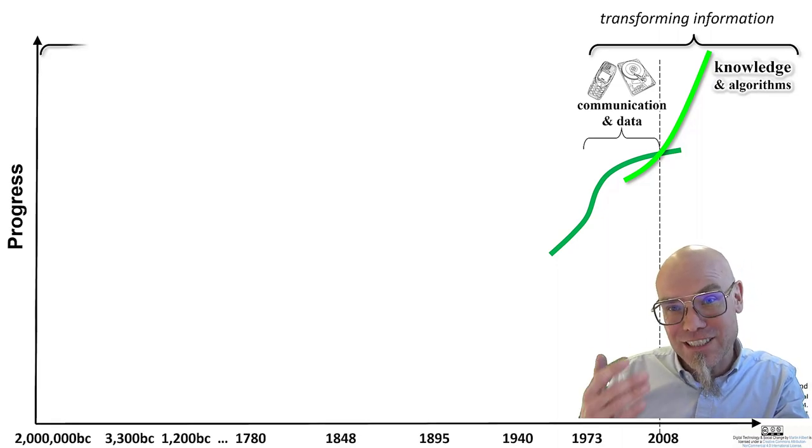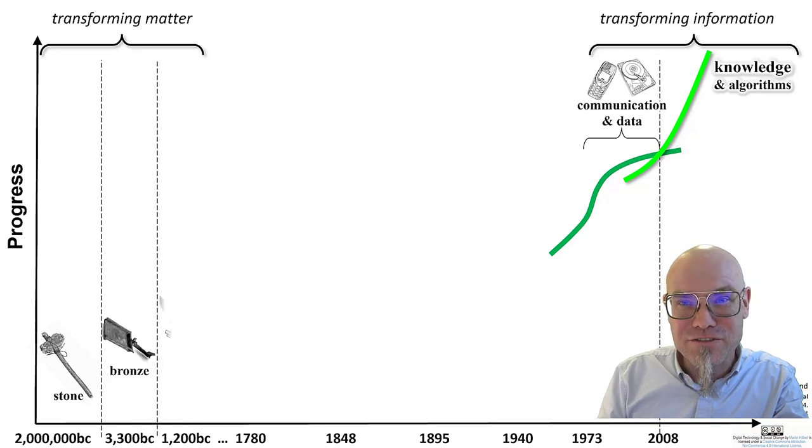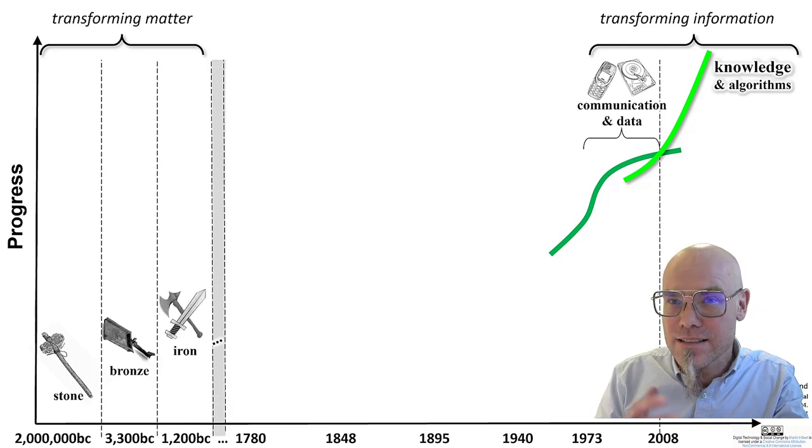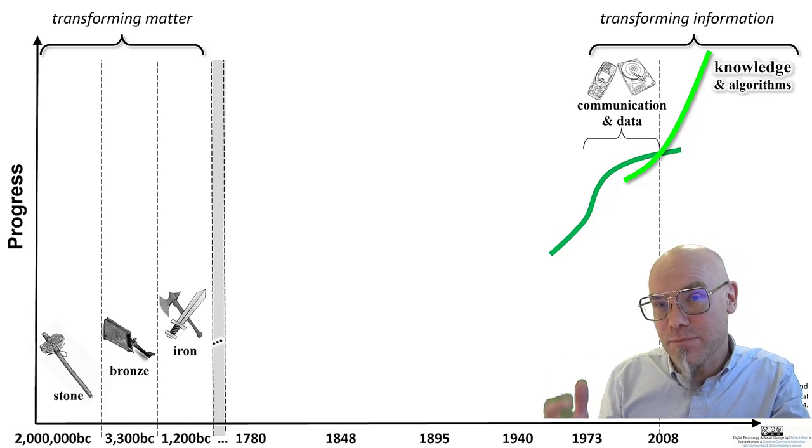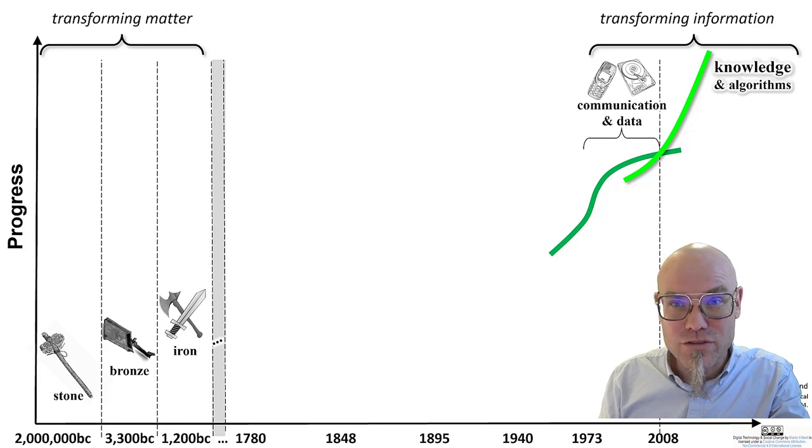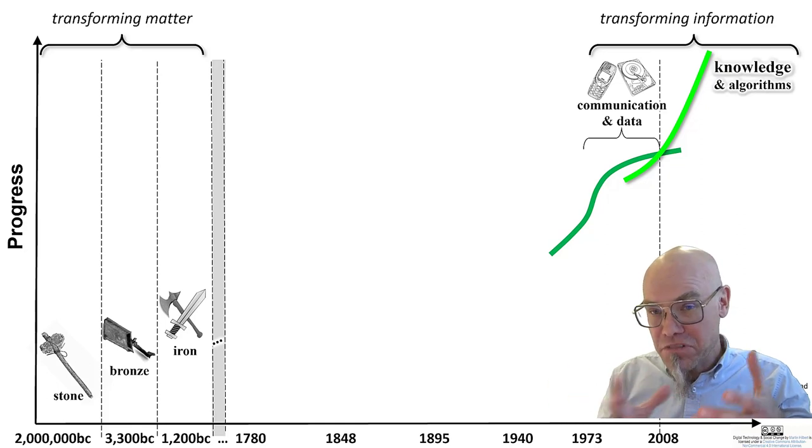And if we go back and look at the big picture, which is one of the main conceptual frameworks of this course, these sub-waves, Schumpeterian long waves, and we'll talk much more about that in a later session, have always happened also in previous technological revolutions. When we started to master matter, the transformation of matter, we did that in different steps.